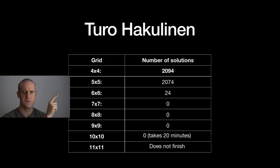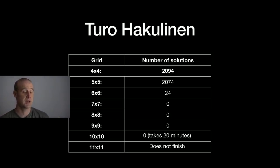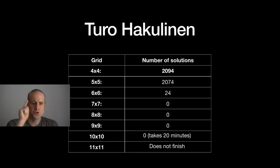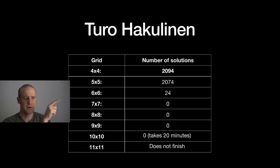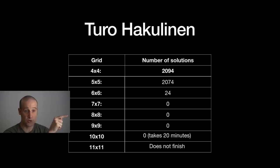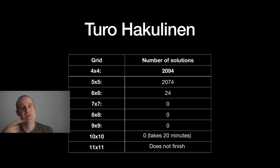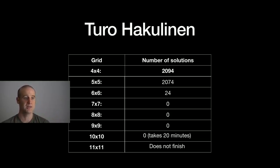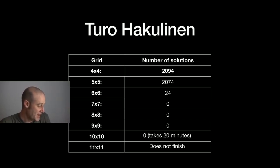The 7x7 can't be done — impossible — and Turo went through a whole bunch of different grid sizes and rightfully found there are no 7x7 solutions. And you can stop there: once you get to an 8x8 grid, it contains a 7x7 in the corner. For an 8x8 to have no squares, you'd need four non-overlapping 7x7 sub-grids all with no squares — but since there are none, you won't get solutions for any bigger boards either.